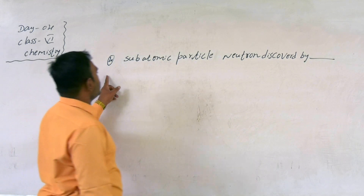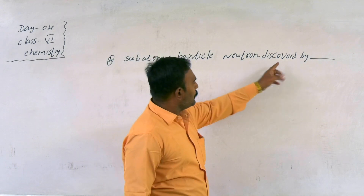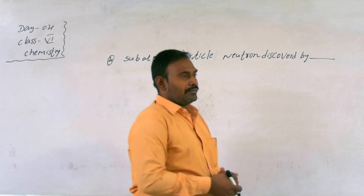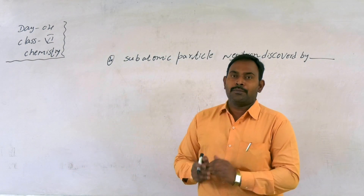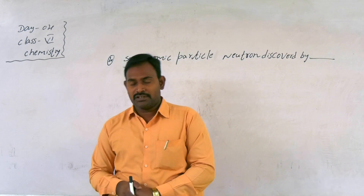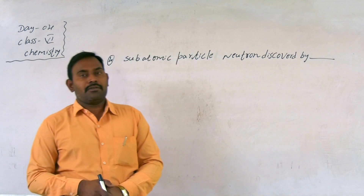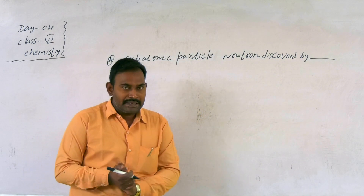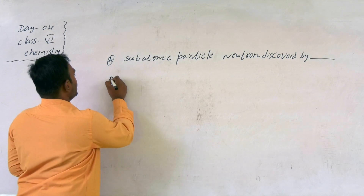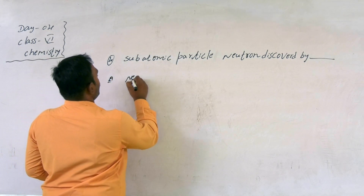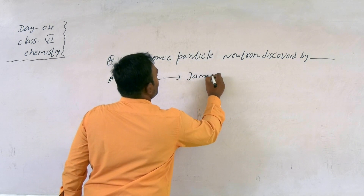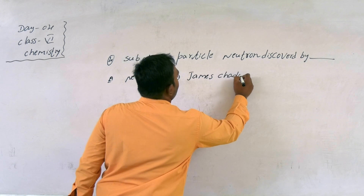Our fourth question is: the subatomic particle neutron was discovered by whom? Inside the atom, we have three subatomic particles: proton, electron, and neutron. Proton was discovered by Goldstein. Electron was discovered by J.J. Thomson. Neutron was discovered by James Chadwick. So, our answer is: neutron was discovered by James Chadwick.